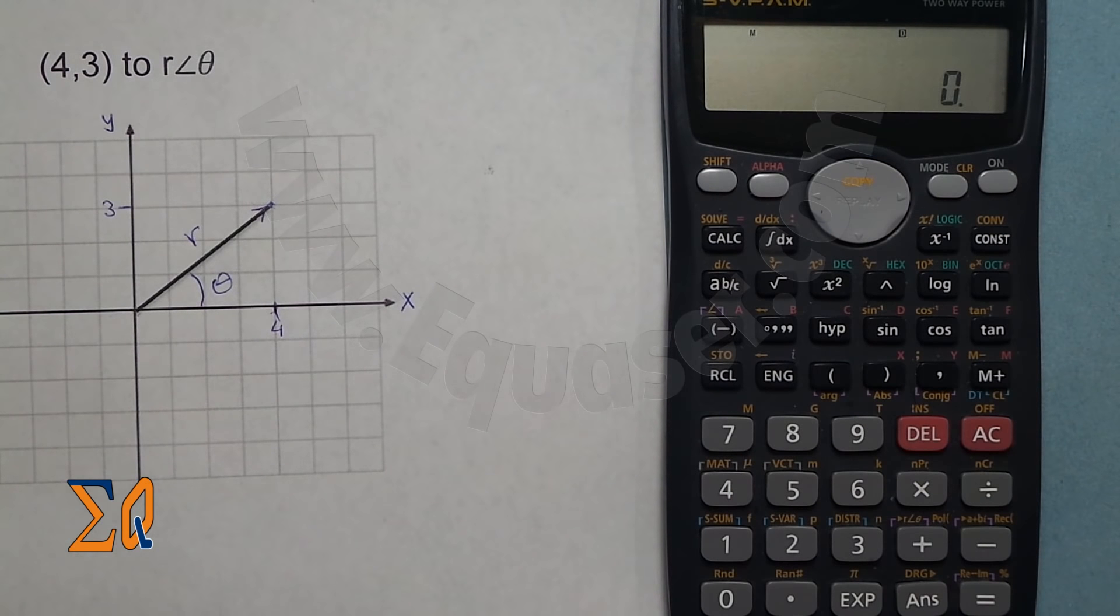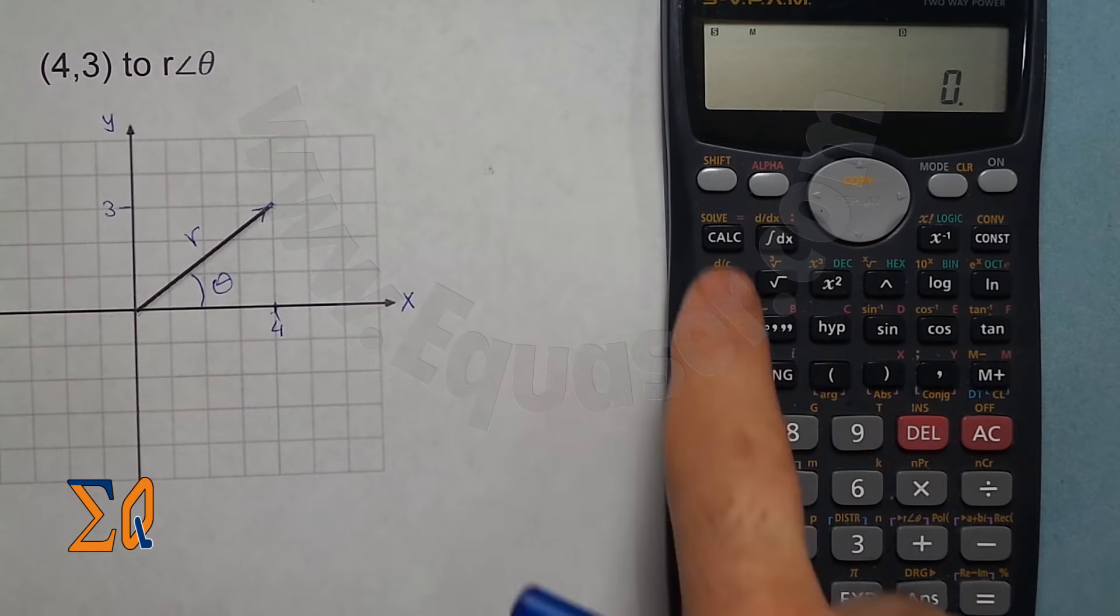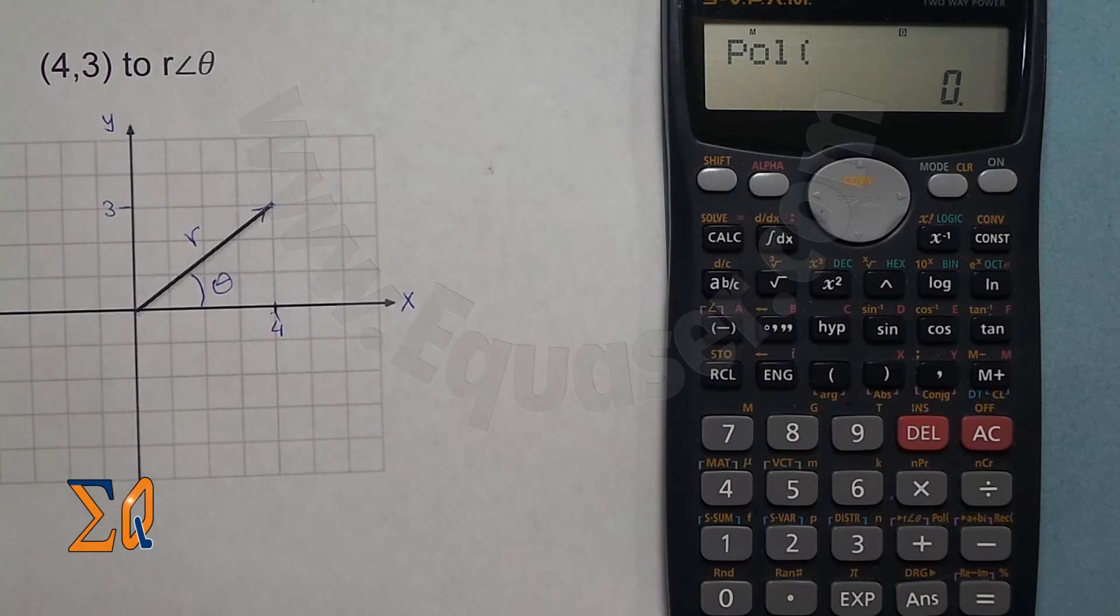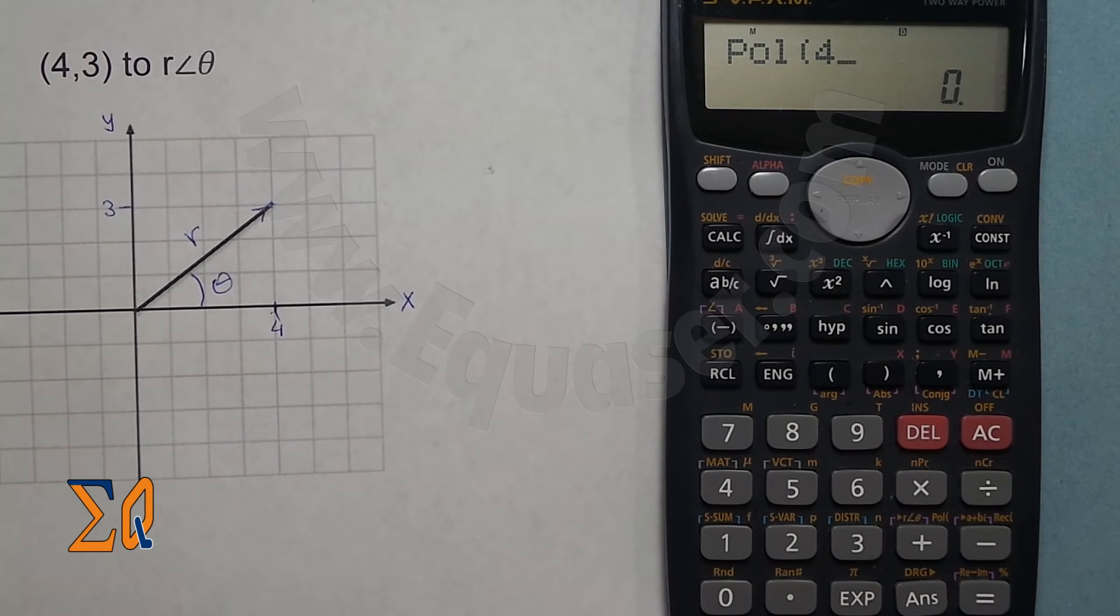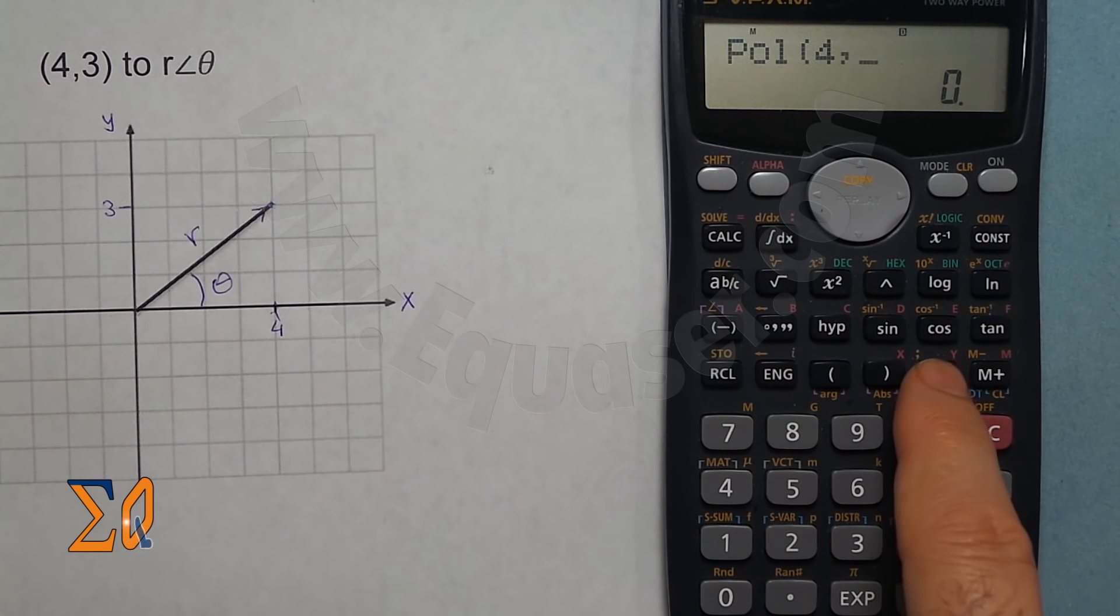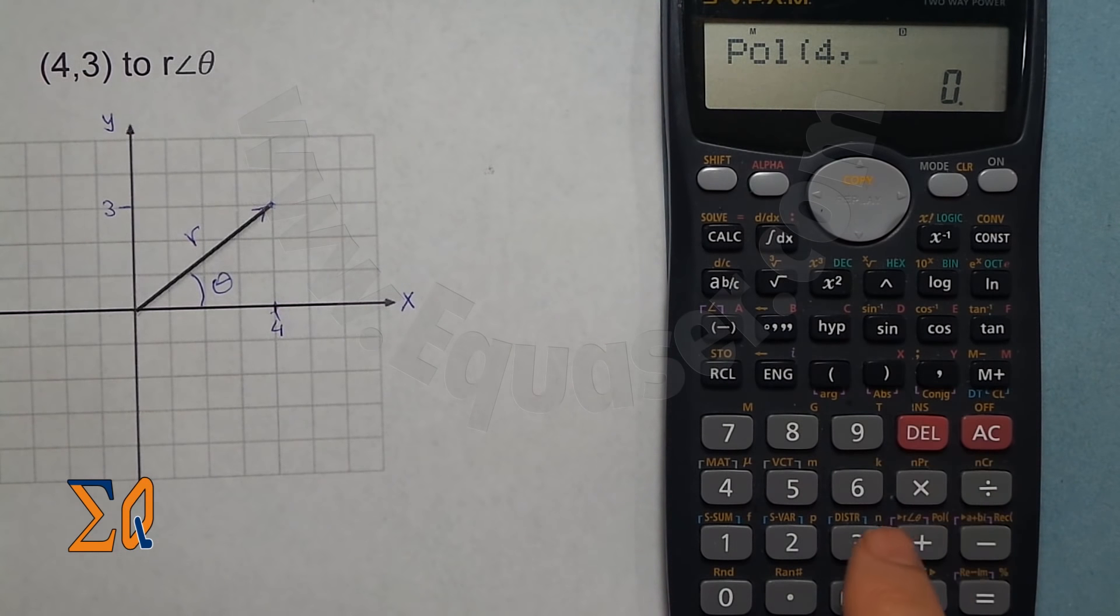We want polar, so shift and then plus sign. We got 'pole' which means we'll convert to polar. Enter 4, and then to enter comma we press this comma button here, and then 3.